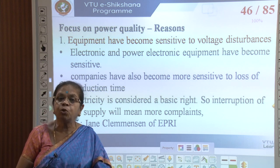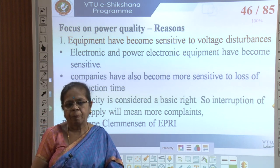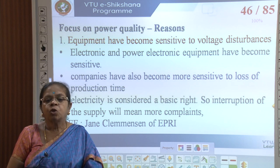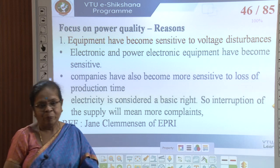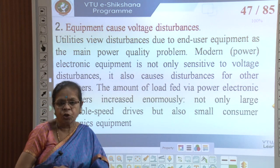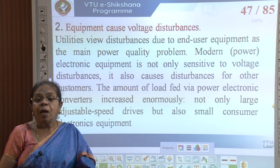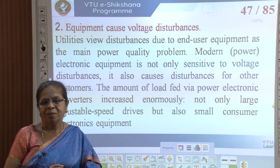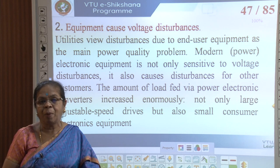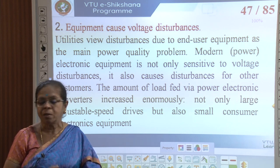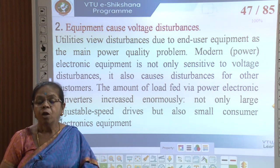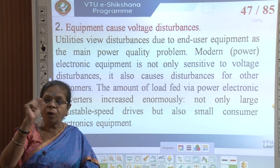Companies have become more sensitive to loss of production time and electricity is considered a basic right, so interruption of supply will mean more complaints. Not only are equipment sensitive, but today we have equipment that causes power quality disturbances — power electronic equipment, converters, inverters, rectifiers, chargers, mobile chargers, laptop chargers, and LEDs all cause power quality aberrations such as deviations in wave shape and introduction of harmonics, deviations in frequency, and deviations in voltage.